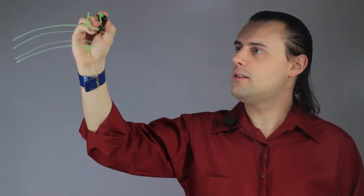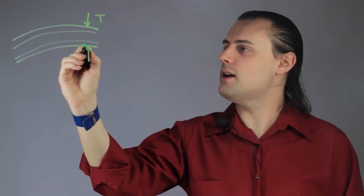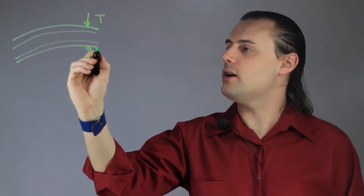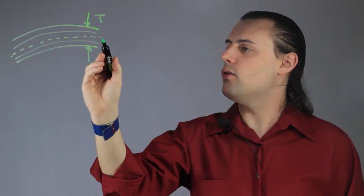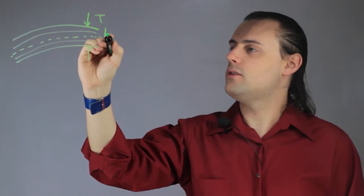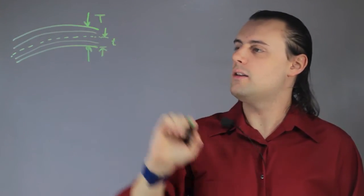One is the thickness, T. Another is the distance from the inner wall, or inner side of the composite laminate, to what we call the neutral line. So this distance right here can be denoted by lowercase t.